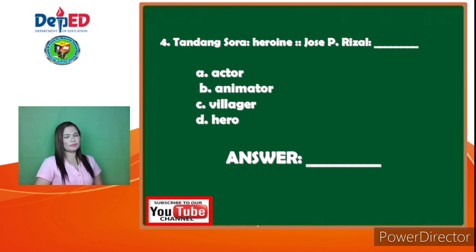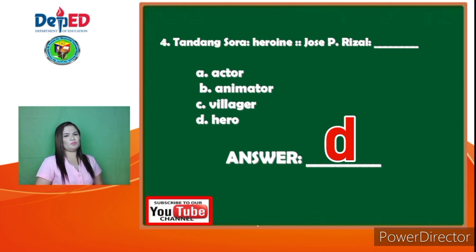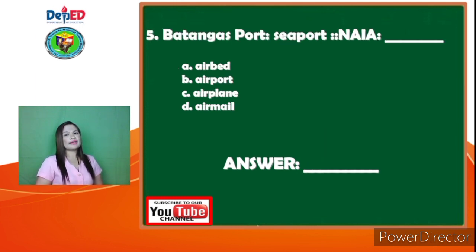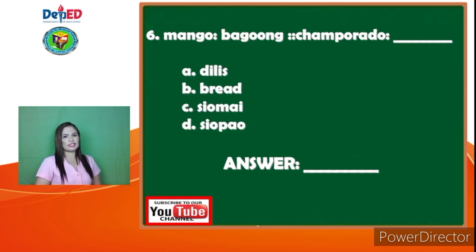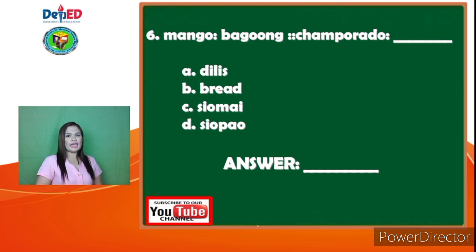Number 4: Tandansora is to Heroine as Crisostomo Ibarra is to — A. Actor, B. Animator, C. Villager, D. Hero. The answer is letter D, Hero. Number 5: Batangas Port is to Port as NAIA is to — A. Airbed, B. Airport, C. Airplane, D. Airplane. The answer is letter B, Airport. Number 6: Mango is to Bagoong as Champorado is to — A. Dilis, B. Bread, C. Siomai, D. Siota. The answer is letter A, Dilis.